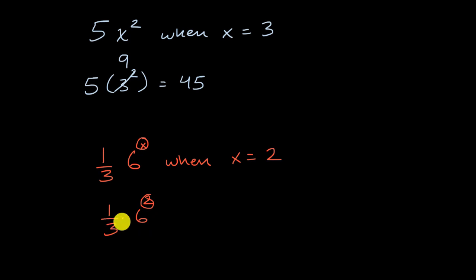And so this is going to be equal to, we do the exponent first, order of operations. So it's going to be one third times six squared is 36, and one third of 36 is equal to 12 and we're done.